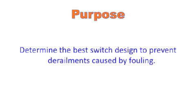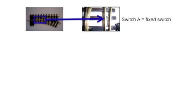The purpose of this experiment was to determine the best switch design to prevent derailments when fouled. The first switch was switch A. This switch is locked in position with a piece of coat hanger wire and is the concept used on most American railroads.